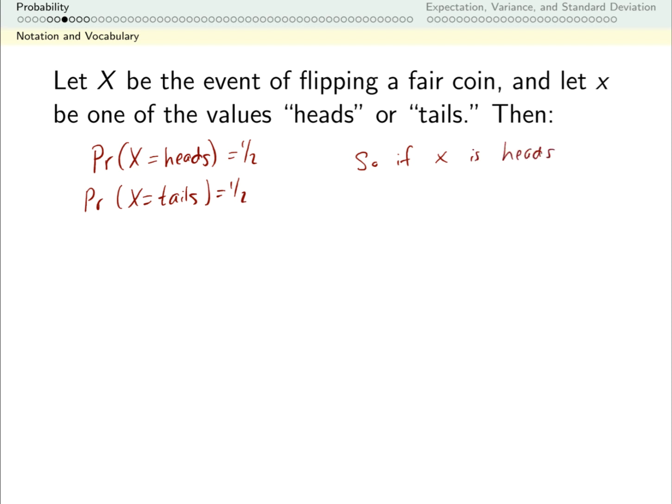I can write the probability that big X, that's my event, is equal to little x, that's my value, is 1/2. This looks a little weird at first glance, this X equals x, so it says the probability that I flip a fair coin and it ends up as x, where x is either heads or tails, that probability is 1/2.